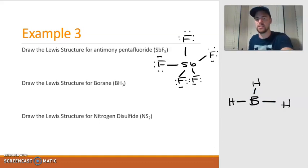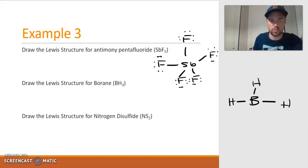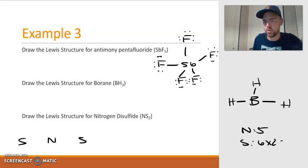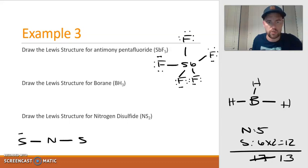And then finally, let's look at NS2. So we have nitrogen with two sulfurs on the side. Nitrogen has five. Sulfur has six, but there are two of them. That's 12 valence electrons for a total of 17. If I do single bonds there, that takes care of four electrons, bringing me down to 13. We have 2, 4, 6, 8, 10, and 12. So what do I do with that one electron that's left over? You stick it on the central.